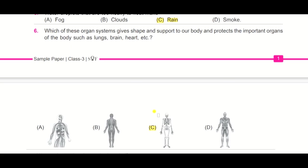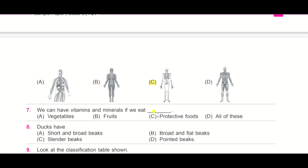Coming to question number seven: we can have vitamins and minerals if we eat vegetables, fruits, protective foods, or all of these? So the answer is D, all of these.